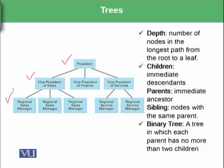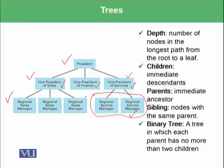Immediate descendants are known as children. For example, the president has three children: vice president of sales, vice president of finance, and vice president of services. An immediate ancestor is called the parent — for example, the regional service manager's parent is the vice president of services. Nodes with the same parent are called siblings — these two are siblings because they share the same parent, and these three are siblings because they share the same parent.